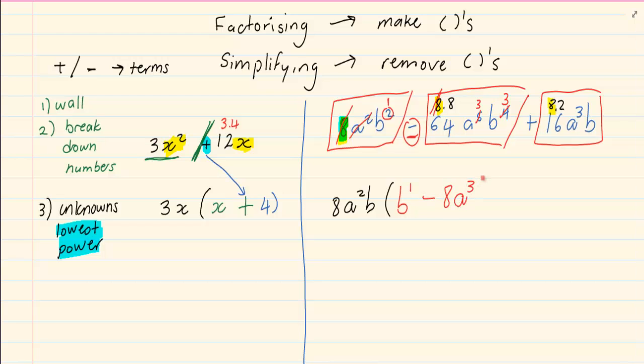a to the power 3, b to the power 3. Now the last term, we are taking out an 8. We are taking out an a to the power 2, which means I will be left with a to the power 1. And we are taking out a b. That leaves us with plus 2a to the power 1. Thank you for watching this video.